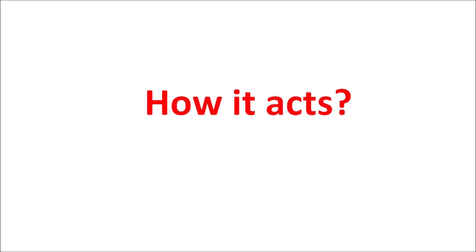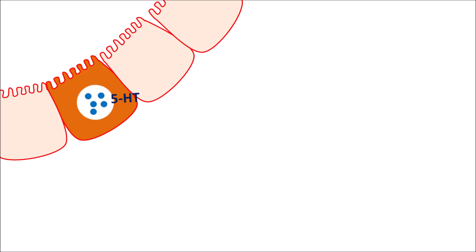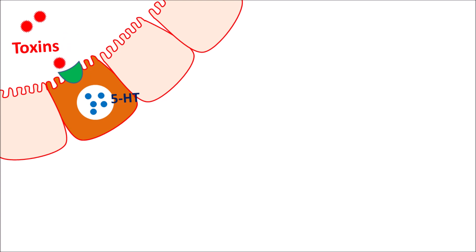Within the GI mucosa, enterochromaffin cells are present which store 5-HT. These enterochromaffin cells are equipped with chemoreceptors, so any toxins present within the GI tract can stimulate them. Toxins or highly irritant drugs such as cisplatin stimulate these chemoreceptors, resulting in the release of 5-HT from the enterochromaffin cells.